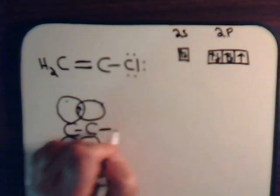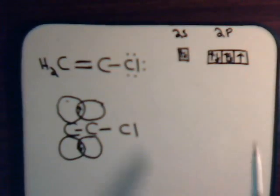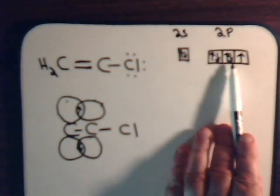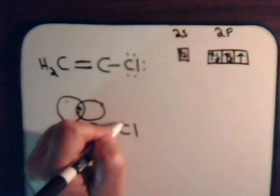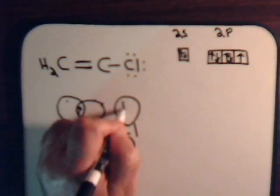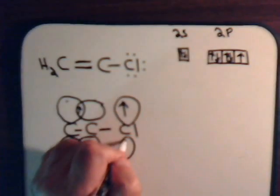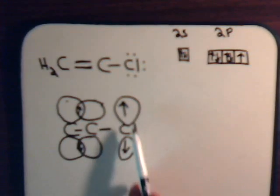And chlorine now has two p orbitals, each containing a pair of electrons. We'll just draw one of them, like this.